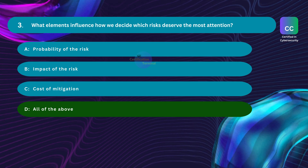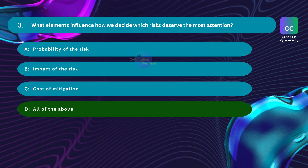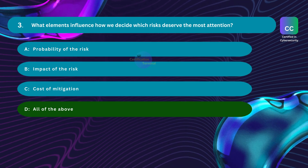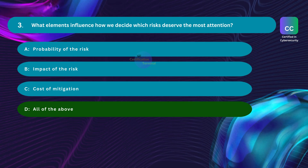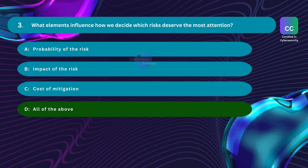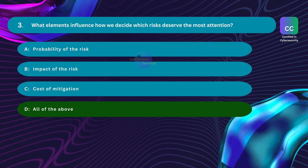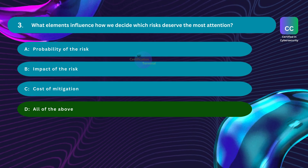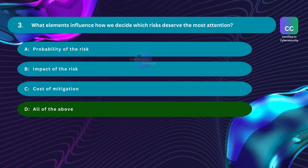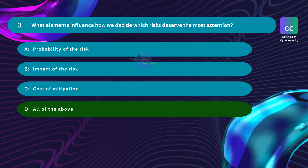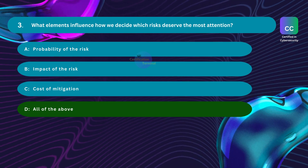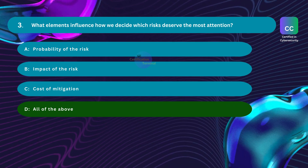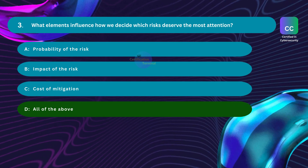Cost of mitigation involves the expenses associated with implementing measures to reduce or manage the risk — such as implementing security controls, purchasing insurance, conducting risk assessments, and hiring experts. Balancing the cost of mitigation against the potential impact and probability of the risk is essential. By considering all these elements together, organizations can make informed decisions about which risks to prioritize. The correct option is all of the above.